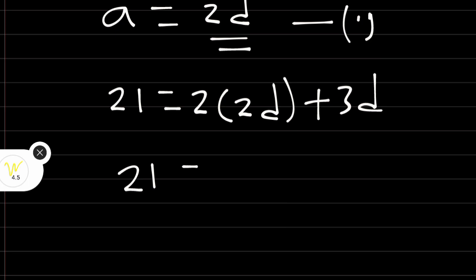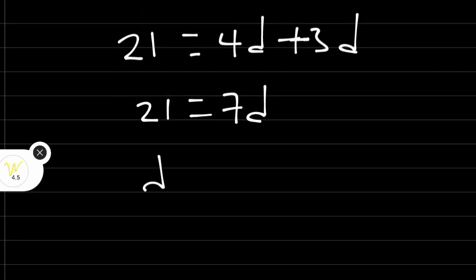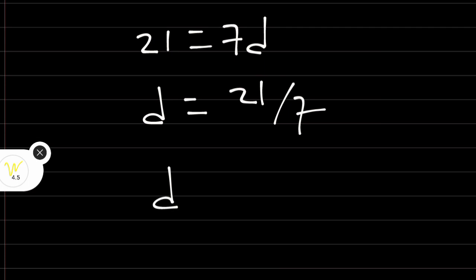Therefore, we have 21 is equal to 2 times 2D. We have 4D plus 3D. 4D plus 3D, we have 7D. Divide both sides by 7, D is equal to 21 over 7. Therefore, D is equal to 3.